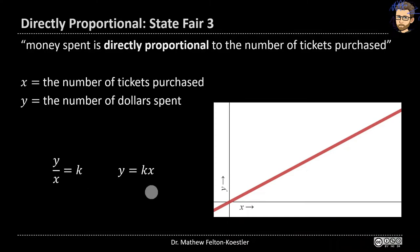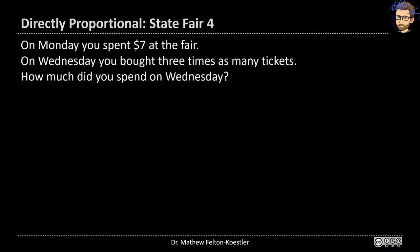As X increases, Y also increases. We can solve problems even when we don't know K. For example, on Monday we spent $7 at the fair, and on Wednesday we went back and bought three times as many tickets. We can figure out how much money was spent on Wednesday even without knowing the price per ticket. This may be intuitively obvious, but I want to talk through the math because we'll use the same kind of thinking on other problems.